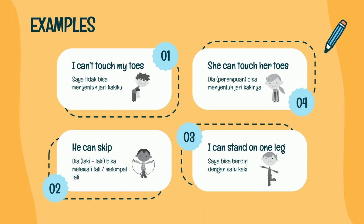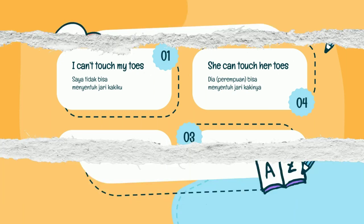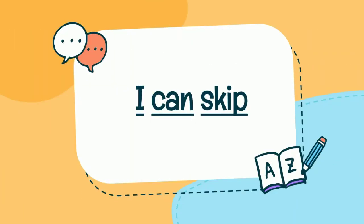Paham ya soleh-soleha semua? Untuk latihannya, kalian bisa buat tiga kalimat tentang combining three words: can dan juga can't. Di sini bisa berikan contoh: I can skip — I di sini sebagai subject, can sebagai verb, dan skip sebagai object. Semangat soleh-soleha semua!